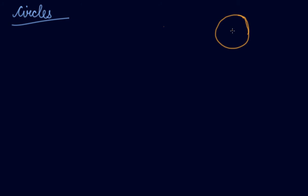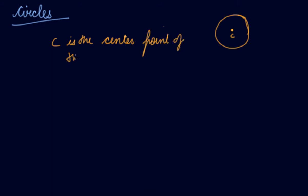Now, the center point of the circle is this. This is known as a point in the center. Let's say C is the center point of the circle. If from C I draw a point here and call it A, then AC is the radius of the circle.